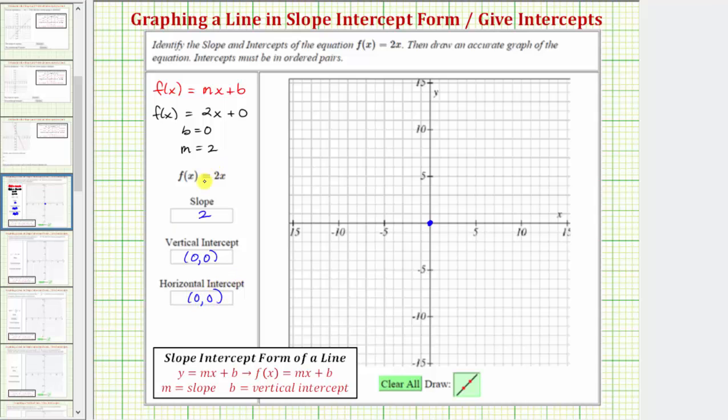Now to graph the line, let's write the slope as a fraction. We can write two as a fraction as two over one. Remember the slope is equal to the ratio of the rise to run, or the ratio of the vertical change to horizontal change along the line.